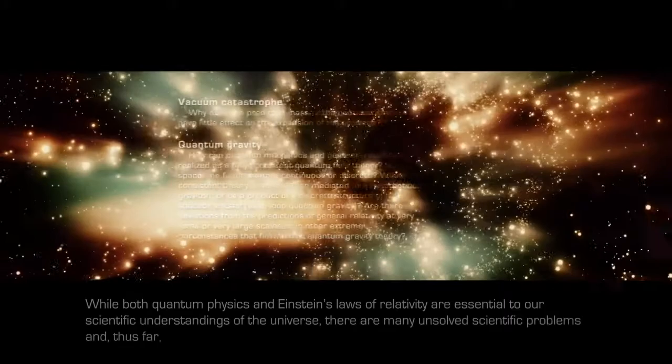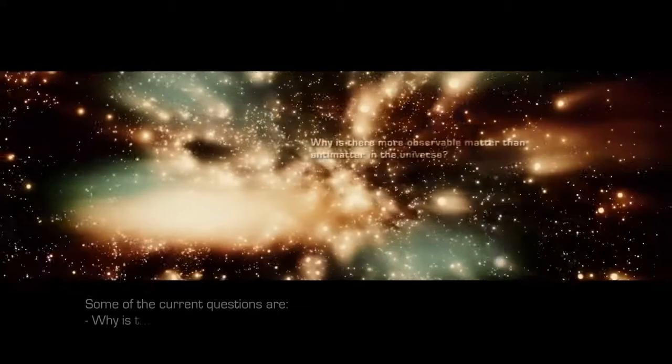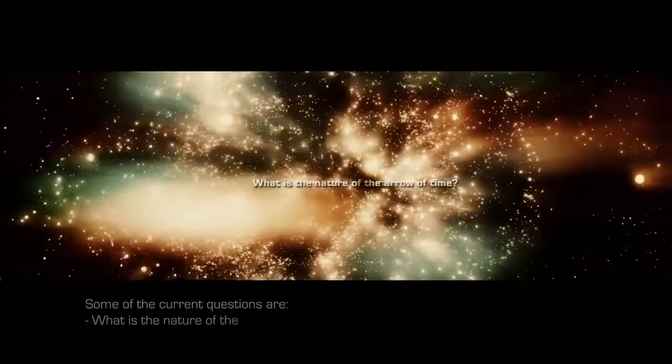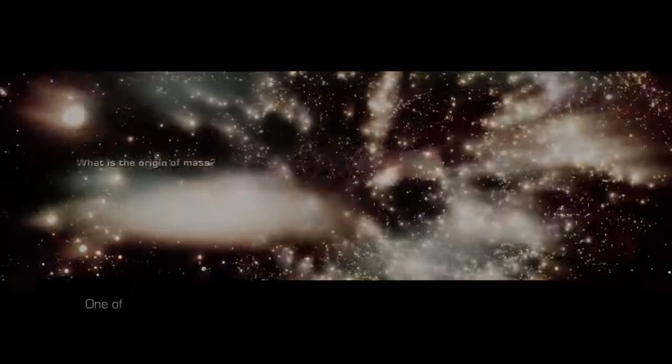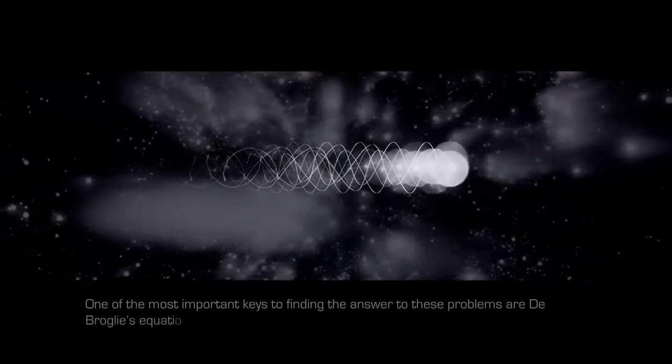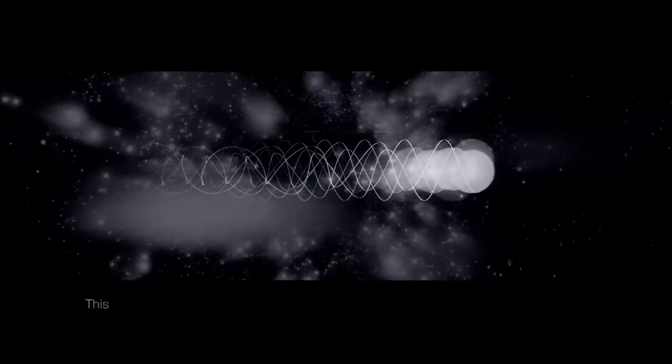While both quantum physics and Einstein's laws of relativity are essential to our scientific understandings of the universe, there are many unsolved scientific problems and thus far no unifying theory. Some of the current questions are, why is there more observable matter than antimatter in the universe? What is the nature of the arrow of time? What is the origin of mass? One of the most important keys to finding the answer to these problems are de Broglie's equations, for which he was awarded the Nobel Prize in Physics.